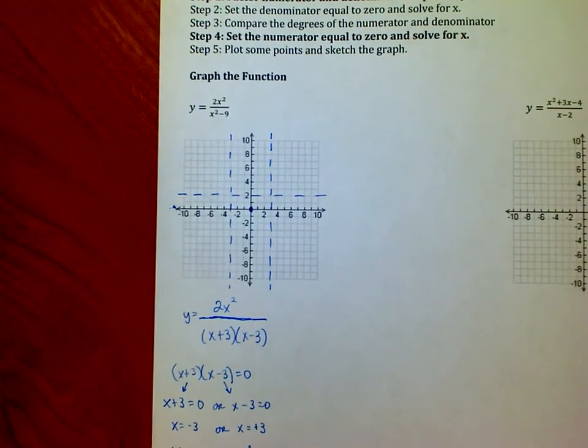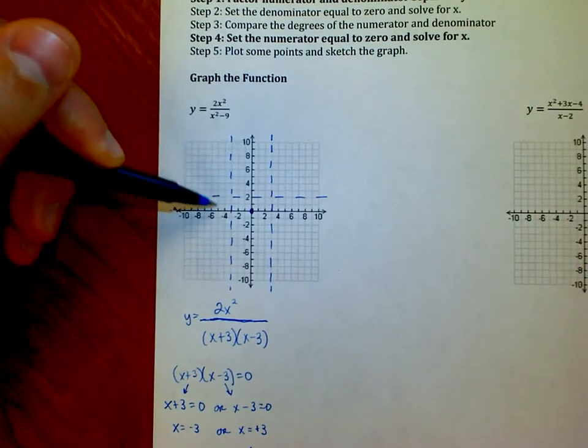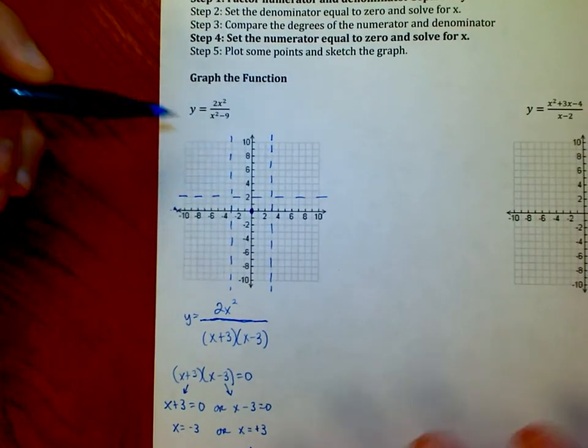I also know that the only point that it crosses the x-axis is at 0. So time to go plot some points. Let's pick a point like negative 4.